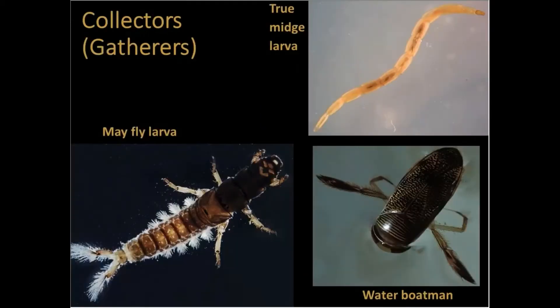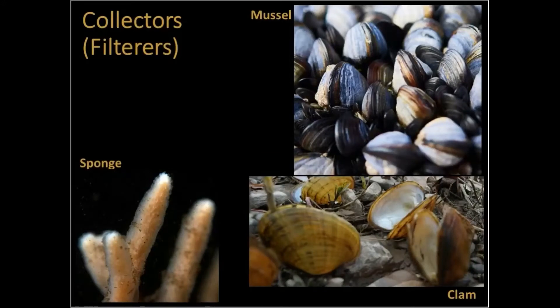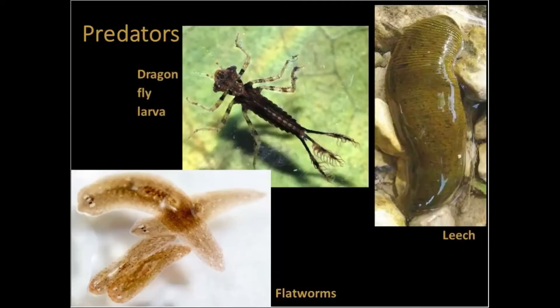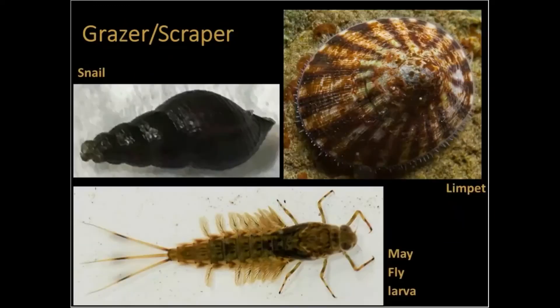Gathering collectors primarily wander the stream bottom looking for FPOM. This includes scavenging for dead organisms, detritus, or other food particles that get lodged between rocks or in deep pools. Filtering collectors, on the other hand, collect FPOM from the water column using a variety of filters. Predators feed on other consumers. Scrapers scrape algae and associated material off rocks and vegetation using rasping mouthparts.